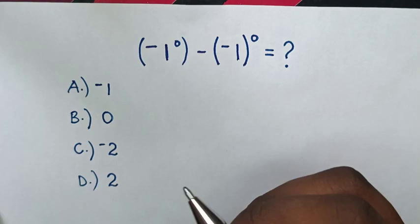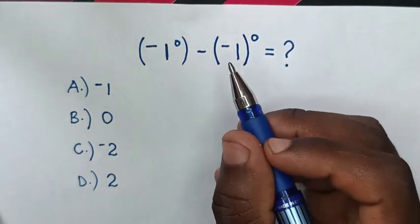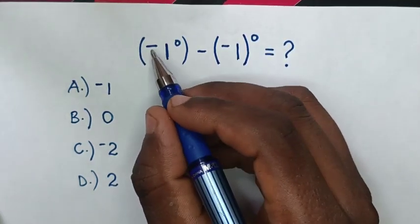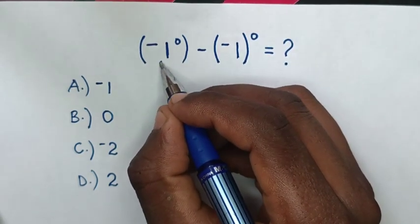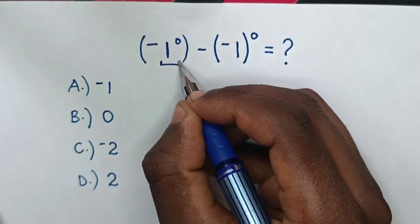So, first we know that any number power 0 is 1. So in here, there is negative 1 power 0. Because the power 0 is inside the bracket, so it will be 1 power 0.